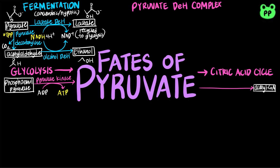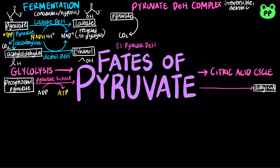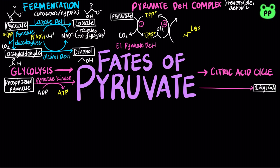The pyruvate dehydrogenase complex consists of three distinct enzymes and five different cofactors. Enzyme 1, pyruvate dehydrogenase, is similar to pyruvate decarboxylase: carbon 1 of pyruvate is released as carbon dioxide, and carbon 2 is attached to the prosthetic coenzyme thiamine pyrophosphate (TPP), forming the hydroxyethyl-TPP complex. Next, the hydroxyethyl group is oxidized to an acetyl group coupled with the reduction of the lipoamide group, which is part of the prosthetic coenzyme lipoic acid of the second enzyme, dihydrolipoyl transacetylase, forming TPP and acyl-lipoamide.